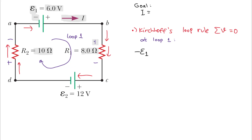Moving on to R1, the current enters the positive terminal, so the sign is plus. Since this is a resistor we need voltage, which we get from Ohm's Law: voltage equals i times R1. Then for the 12-volt battery E2, the current enters its positive terminal, so the sign is positive and the term is plus E2.